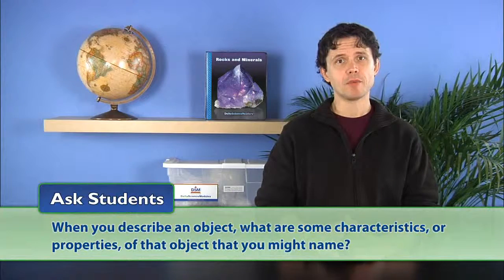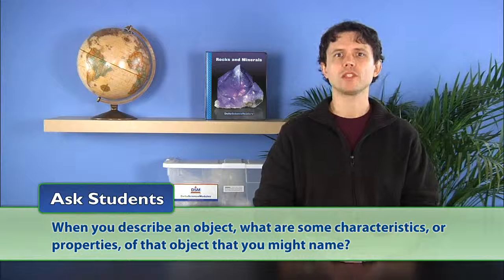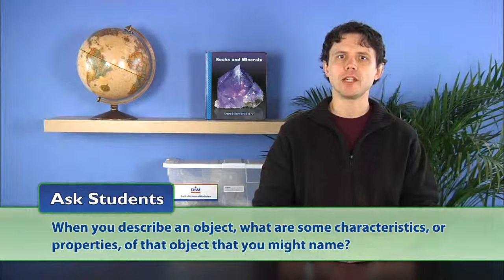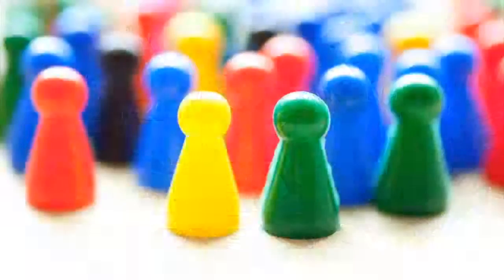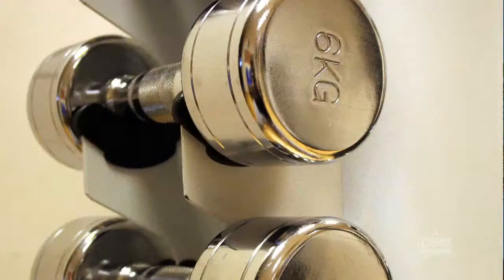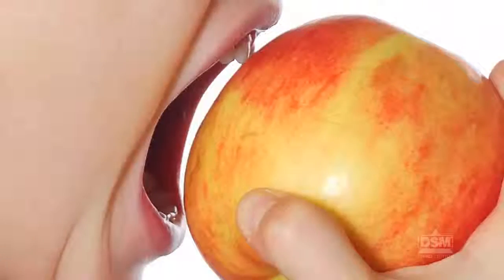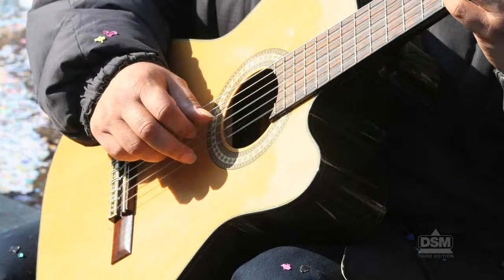Then ask, when you describe an object, what are some characteristics or properties of that object that you might name? Students should name a number of characteristics, such as color, shape, size, weight, smell, taste, texture, and the sound the object makes.